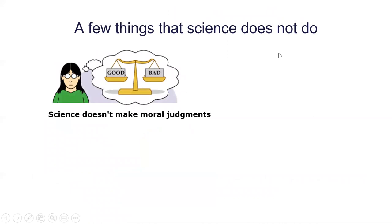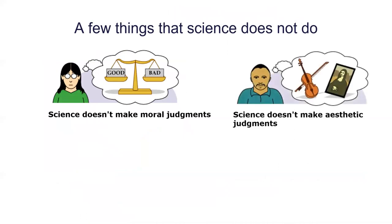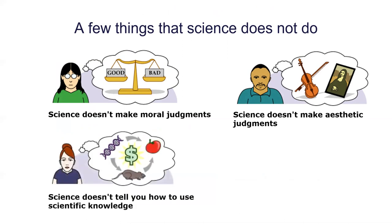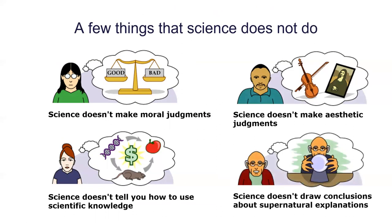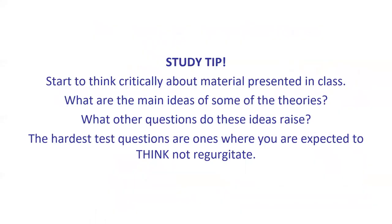So what are some things that science does not do? Science doesn't really make moral judgments — that's not really what it does. How do we even make knowledgeable moral or aesthetic judgments? Science doesn't say something is beautiful or ugly. Science doesn't tell you how to use knowledge — do you use nuclear power to make bombs or to make electricity? And like I said, it's not usually metaphysical — it's restricted to the natural world.